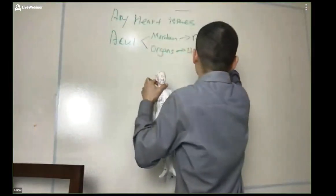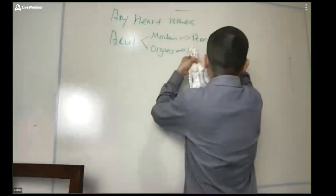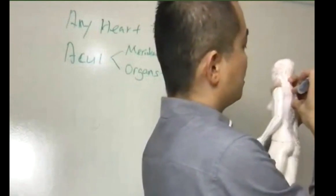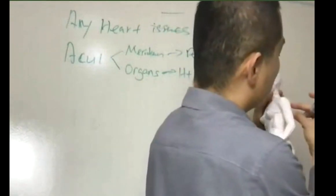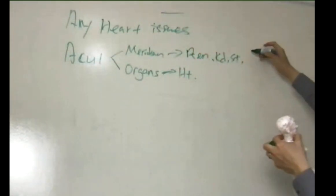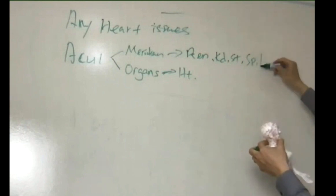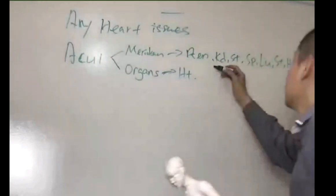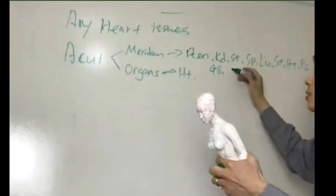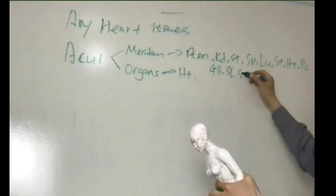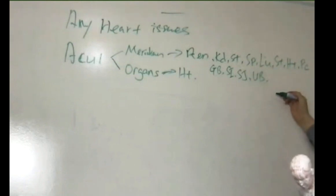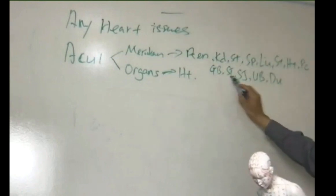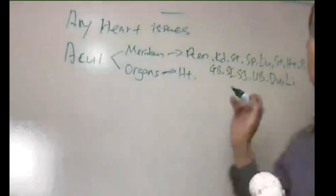We have meridians here: kidney meridian, stomach meridian, and meridians on the opposite side. Basically you have all the meridians from here to here. We can go for spleen, stomach, lung meridian, sunshine meridian, heart meridian, pericardium meridian, gallbladder meridian, small intestine meridian, UV meridian, and two meridian, as well as large intestine meridian. So totally about 14 meridians.